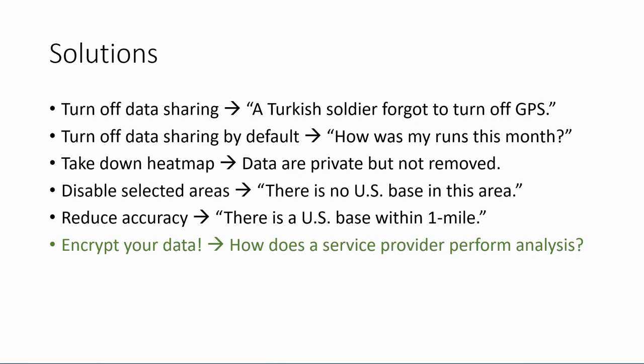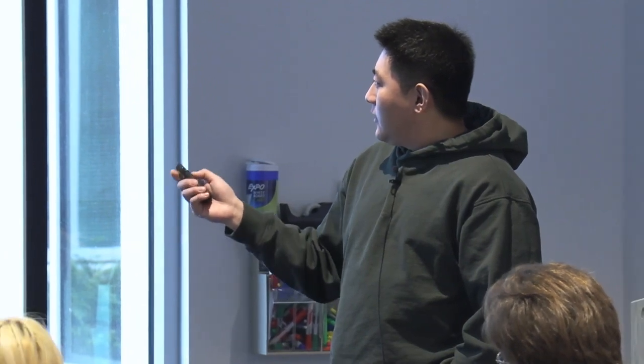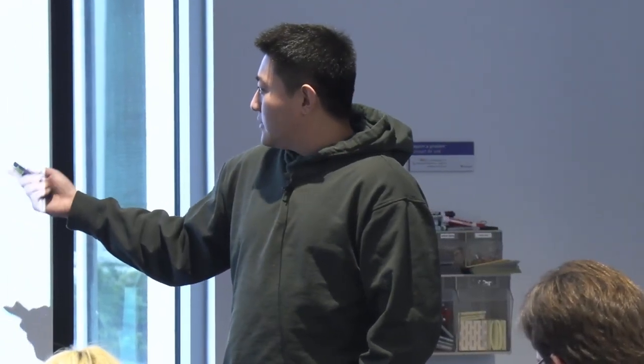Disabling selected areas — you can see a blank spot in the middle of nowhere in a desert. And reducing accuracy — I think that's chosen by Airbnb, for example: you don't show the exact location of the house, you just show the house might be within 10 blocks. But this might not work for a fitness app because you really want to see your daily route. You can also encrypt your data — not talking about homomorphic encryption yet — just regular encryption. This should work, but how does the service provider perform analysis for you? Without analysis, Strava has no value.